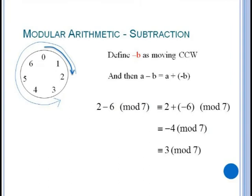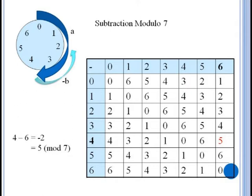Subtraction is also the same. A minus B equals A plus negative B. So A wraps clockwise and B wraps counterclockwise. Or again just do normal integer subtraction and find the remainder. We can see that two minus six wraps around to three or we can just say that two minus six equals negative four which is equivalent to three mod seven. Here's a table of the operation subtraction.